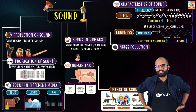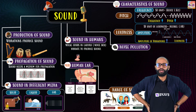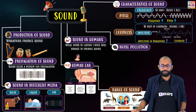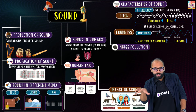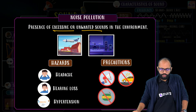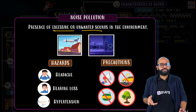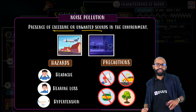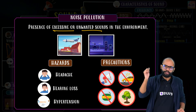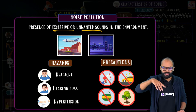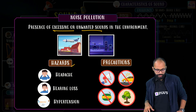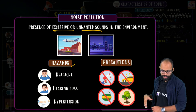Next is noise pollution. Noise pollution is the presence of excessive or unwanted sounds in the environment. Common sources include car honking, factory noise, and mills. The hazards of noise pollution include headache, hearing loss, and hypertension.